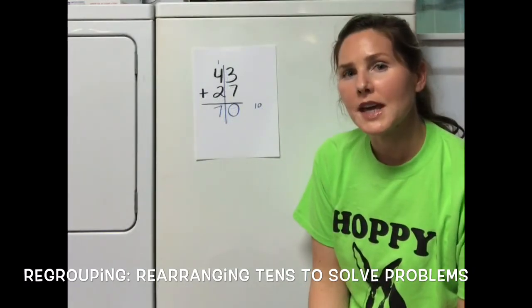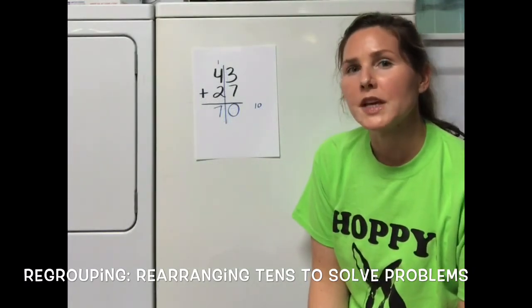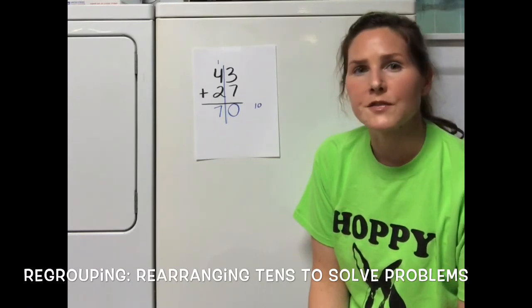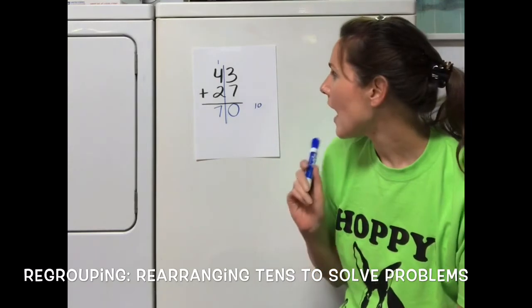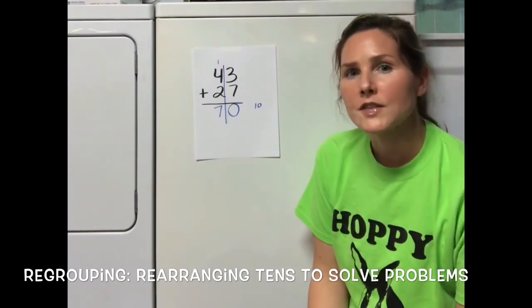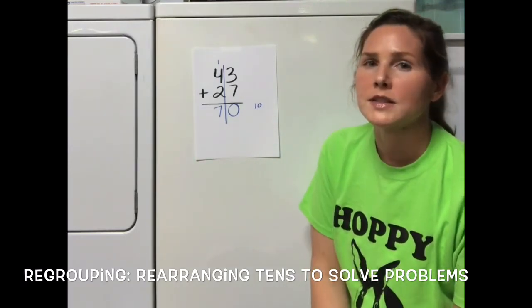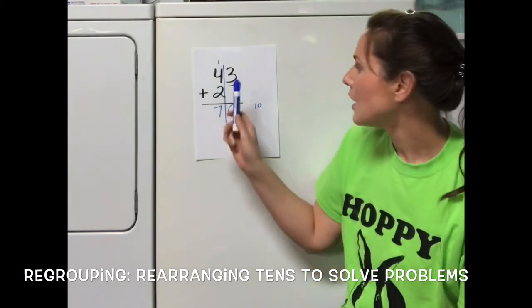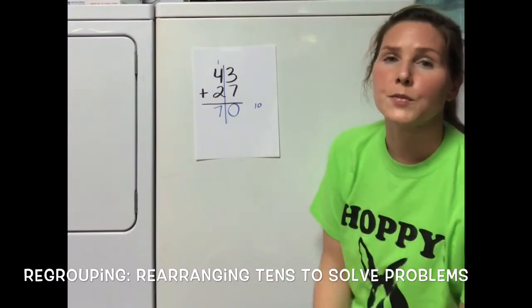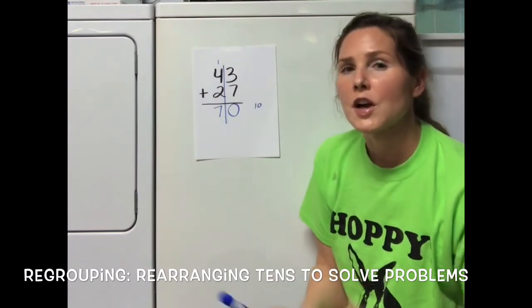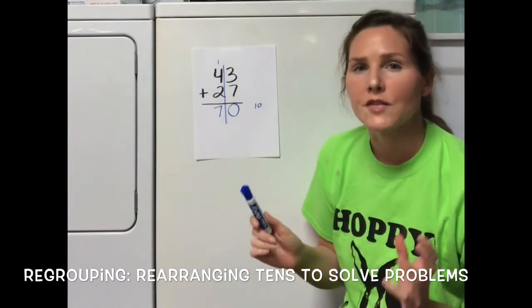Adding with regrouping can be tough, but what it's doing is putting together a lot of the different skills that you've been working on since kindergarten. In order to add with regrouping, you have to understand the difference between ones and tens. You have to know how to add 3 plus 7 and how to add three different addends, 1 plus 4 plus 2.